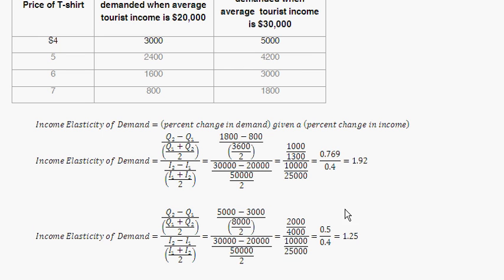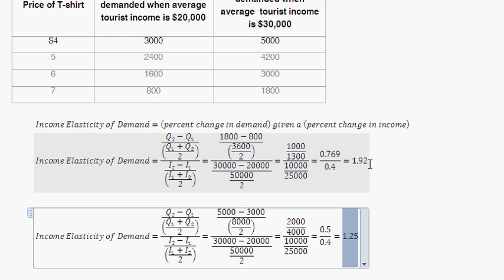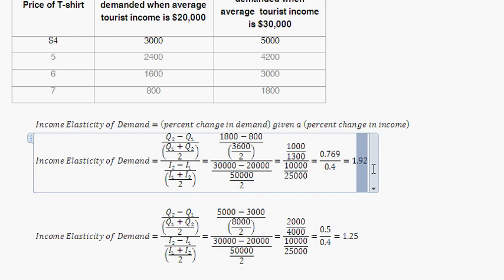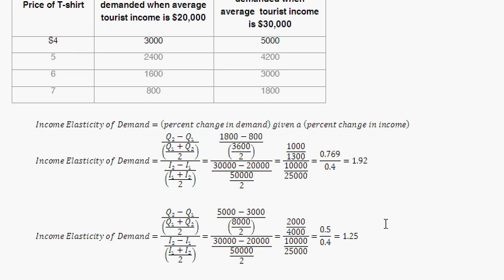Comparing the two income elasticities of demand — when price was lower versus when price was higher — there isn't too much intuition to draw there. This question is more of a nitty-gritty, grind-it-out elasticity calculation. Hopefully this was helpful. Let me know if you have any questions.